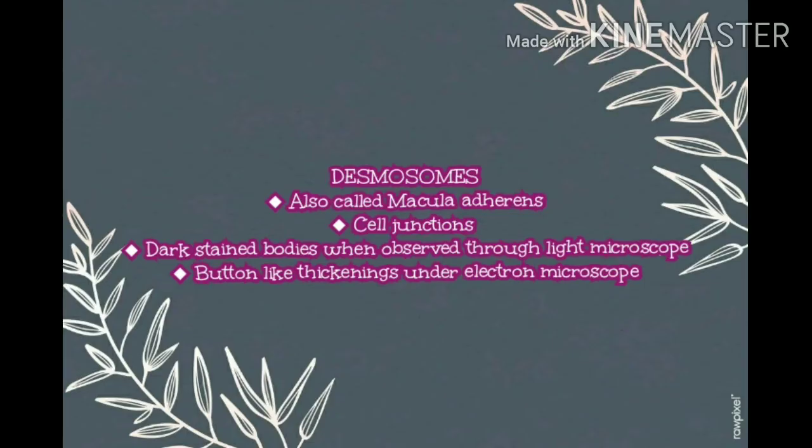The fourth modification is desmosomes, otherwise called macula adherens. These are also cell junctions, commonly seen in columnar epithelium. Under a light microscope they appear as dark-stained bodies, and under an electron microscope they appear as thickened buttons, as shown in the picture.